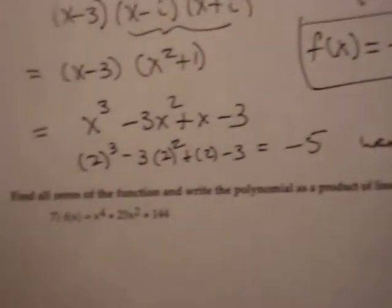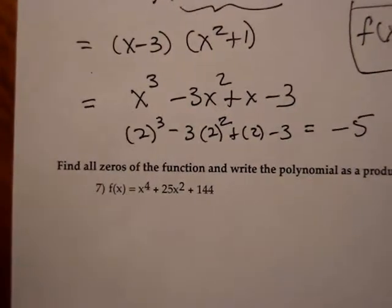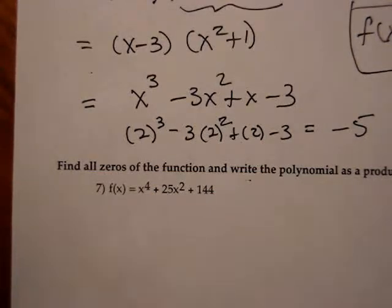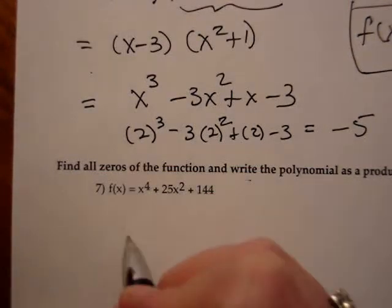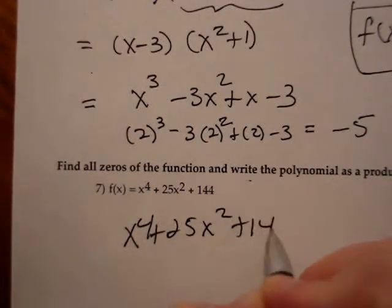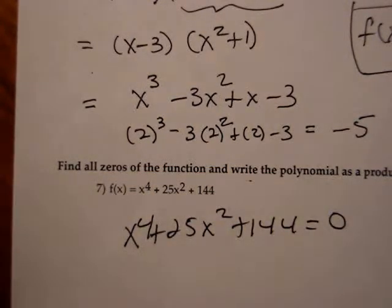Okay, now I'm gonna do number 7. It says find all zeros of the function and write the polynomial as a product of linear factors. So find all zeros means take the polynomial and set it equal to 0.